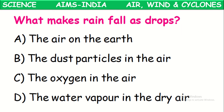What makes rainfall occur as drops? The dust particles present in the air make them heavy, forming droplets of water — that is what causes rainfall to occur as drops.